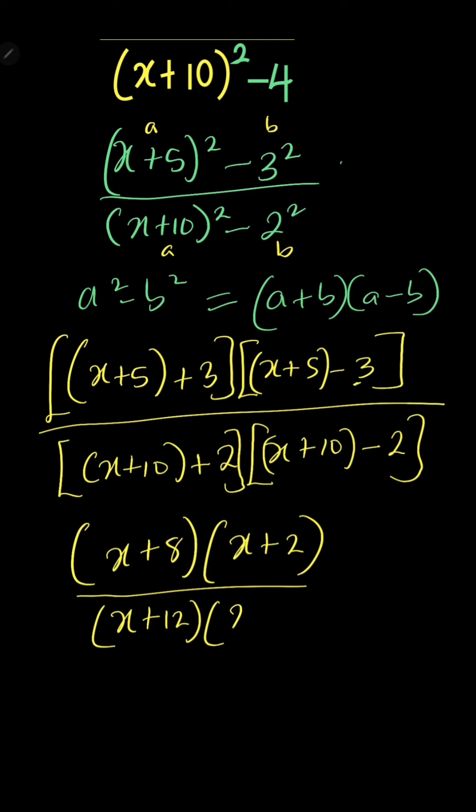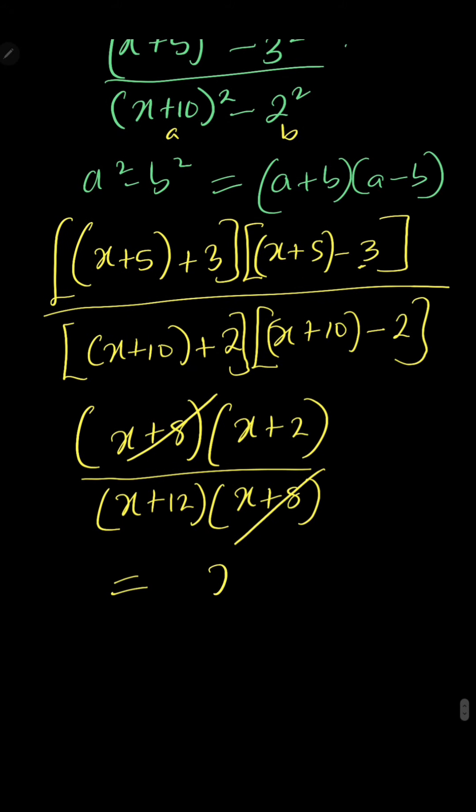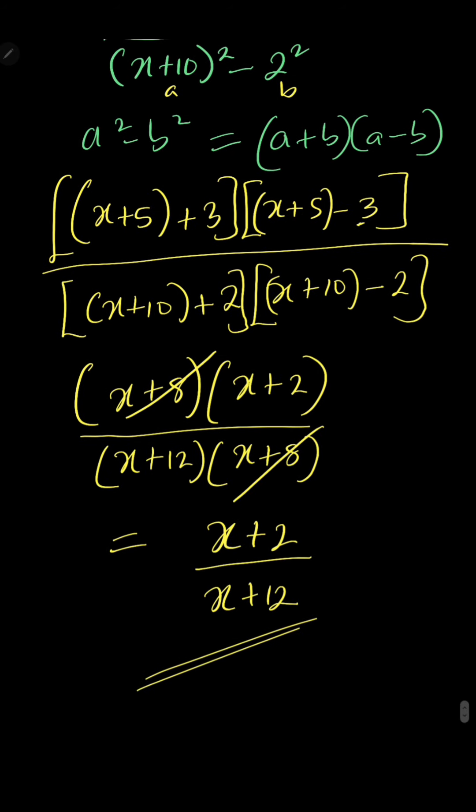So (x+8) will cancel out (x+8). We are now left with (x+2) all over (x+12), and this is the right solution to this simplification. Bye!